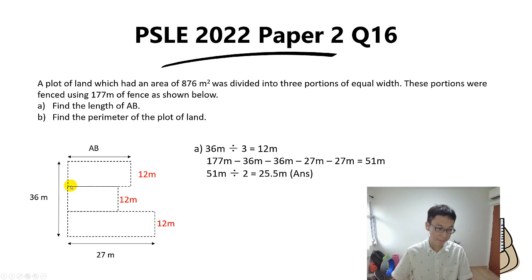Remember, perimeter doesn't include the length inside the area. So our job is to find these two lengths, and then we simply take 177 minus these two lengths, and we get the answer.